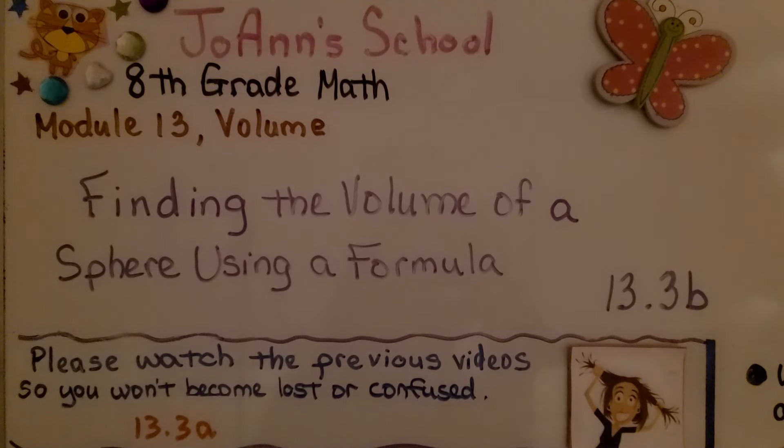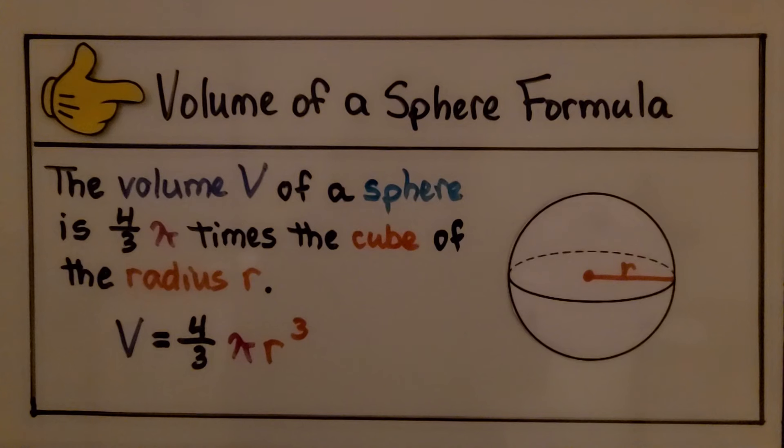Finding the volume of a sphere using a formula, lesson 13.3b. Here we have the volume of a sphere formula for your notes. The volume V of a sphere is 4 thirds pi times the cube of the radius r. That means we're going to do a 3 as an exponent for the radius. V equals 4 thirds pi r cubed.